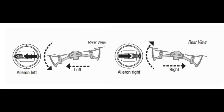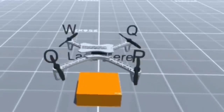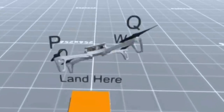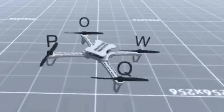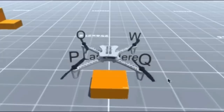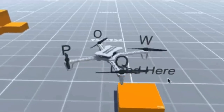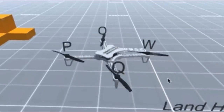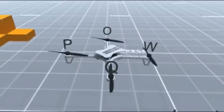And the same applies for the right direction. Now, how can we roll the quadcopter? If you have ever seen a quadcopter, you might have noticed that two motors rotate clockwise while the other two rotate anticlockwise. This is called conservation of angular momentum. This is done to stop the quadcopter from rolling.